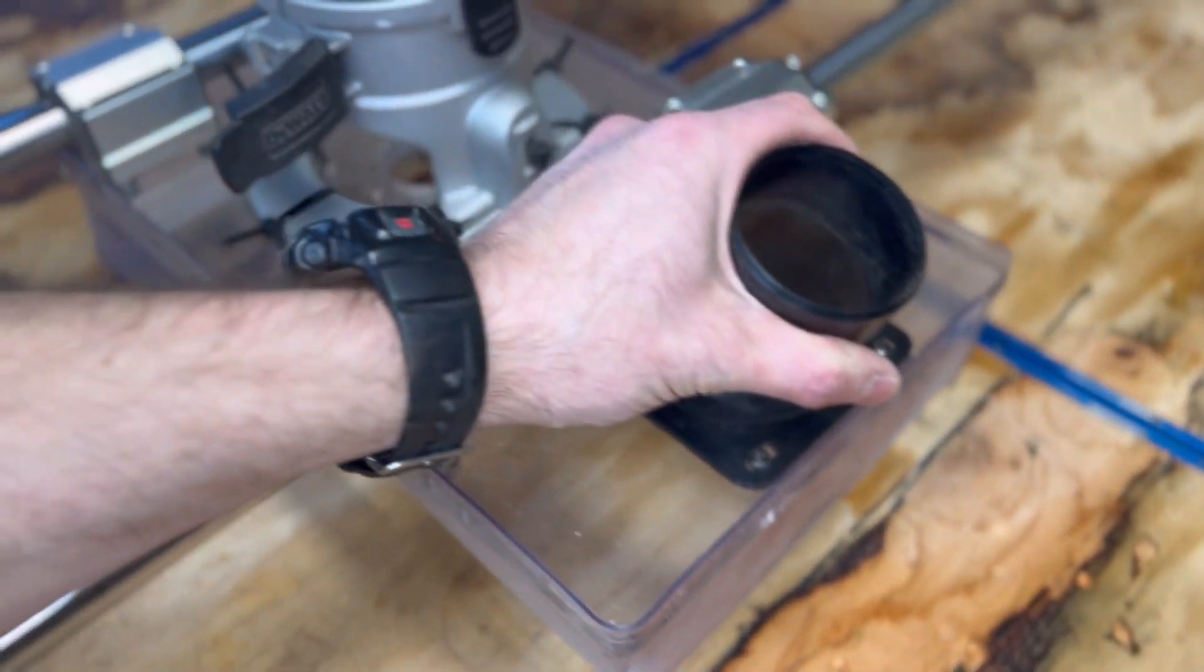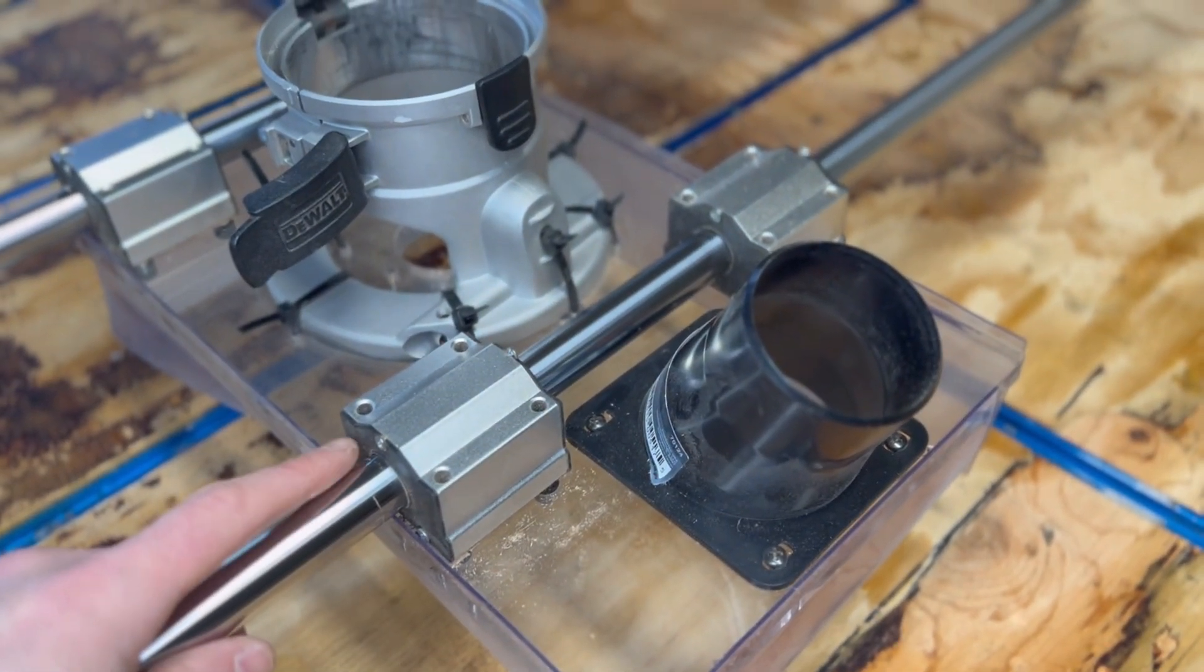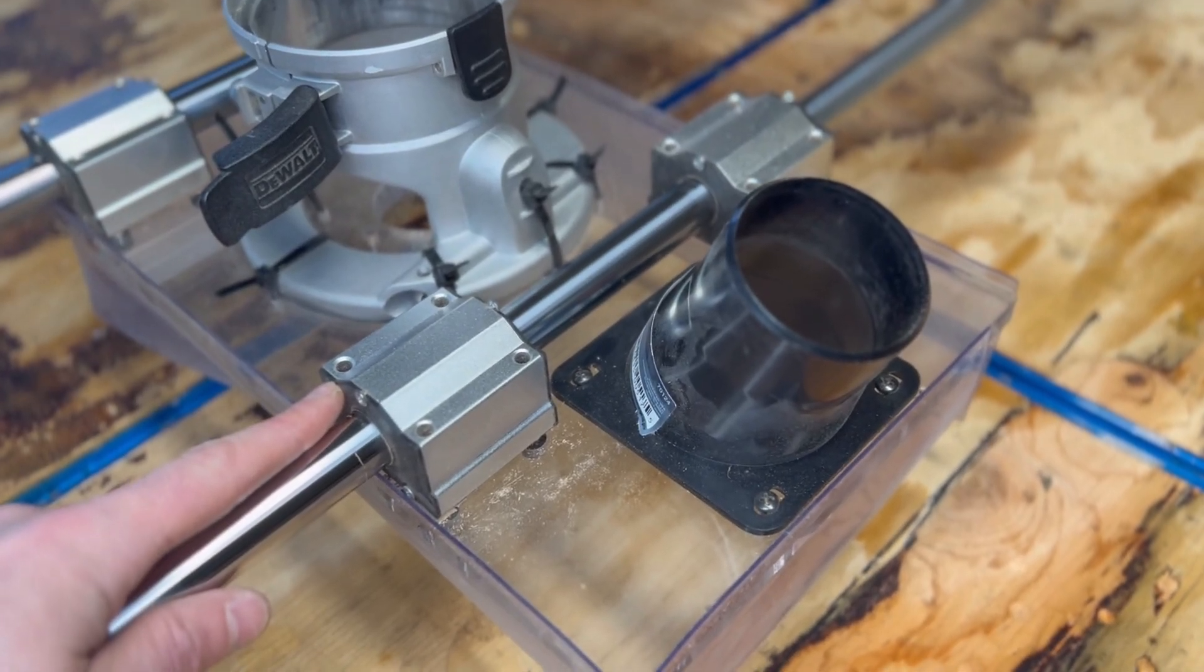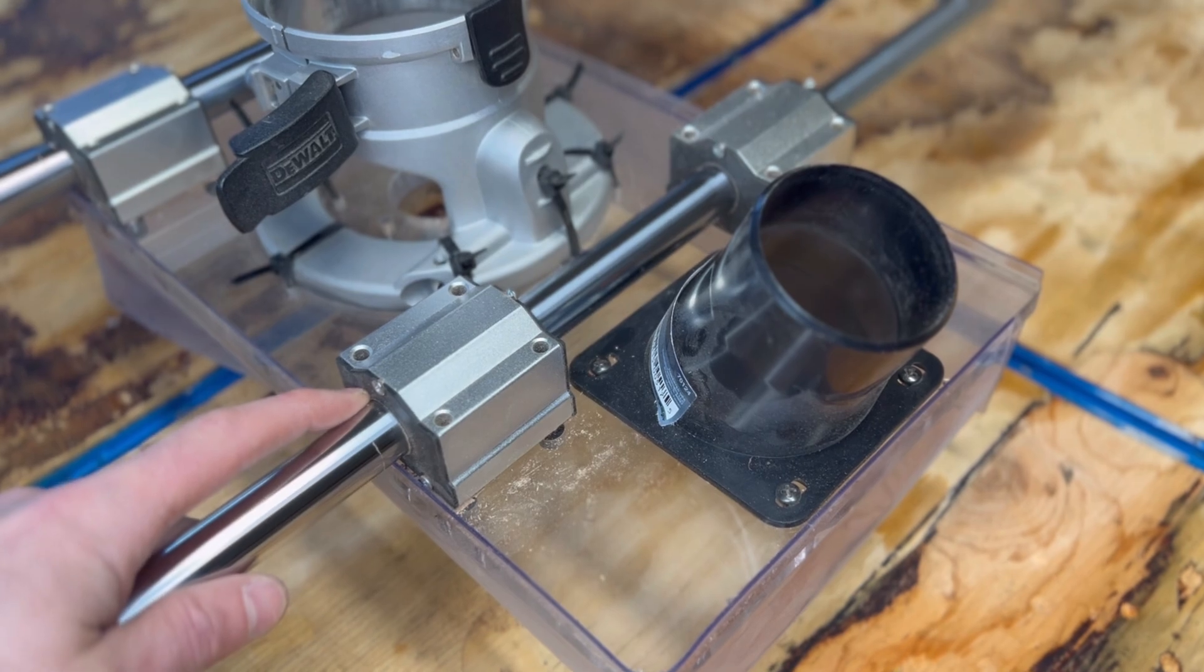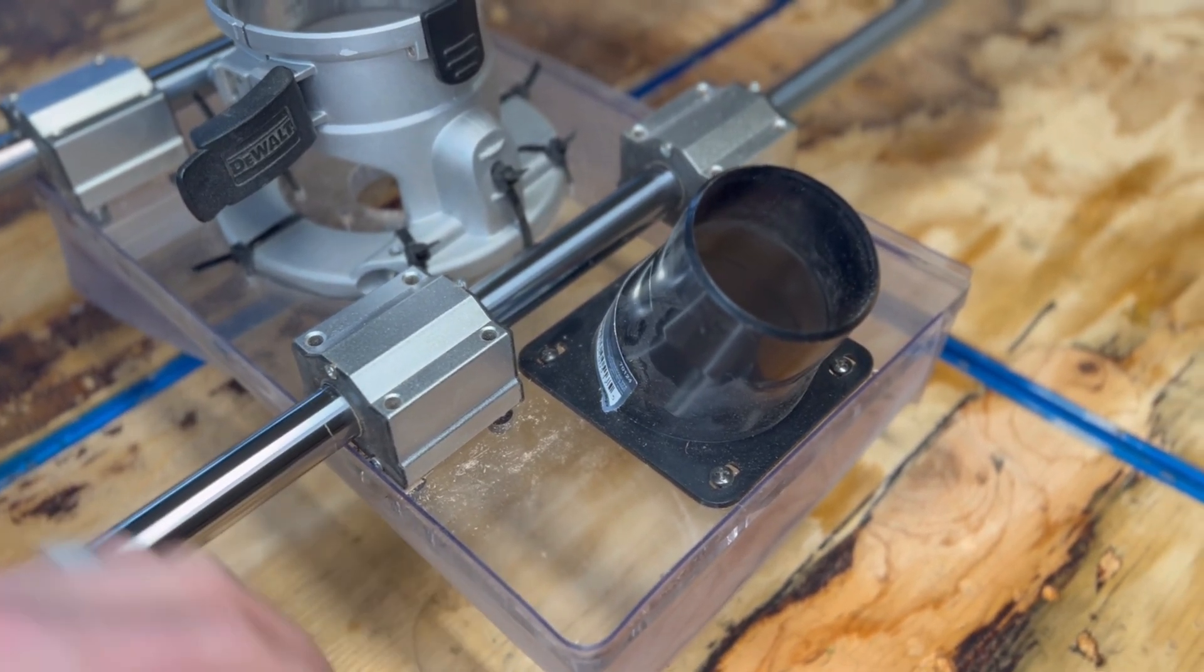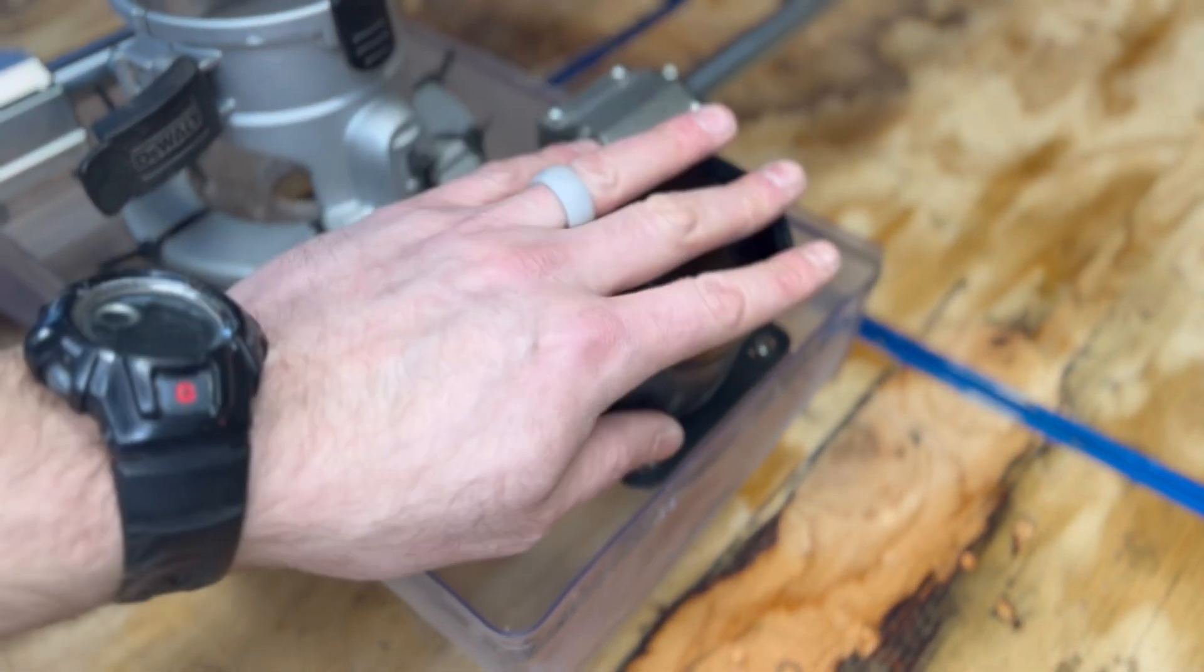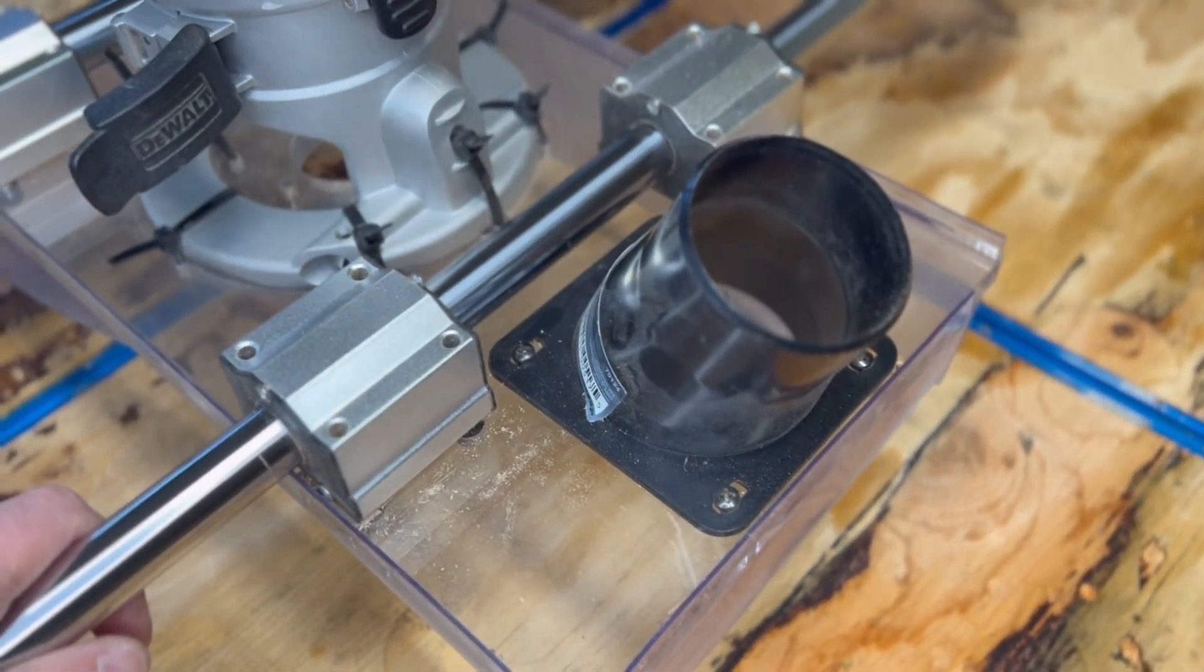Also, you can buy an optional two and a half inch dust collection port. It gets all the fine dust out when you're running a dust collection system. It's not going to get the chips, but you're going to notice a huge difference if you're using this. I highly recommend buying that add-on feature.